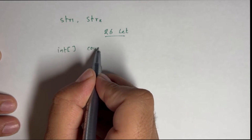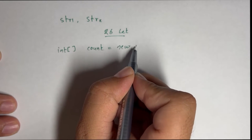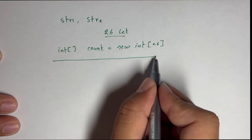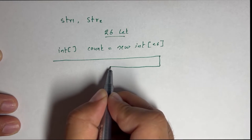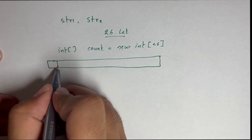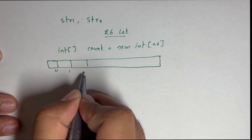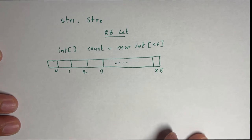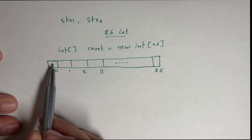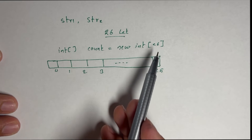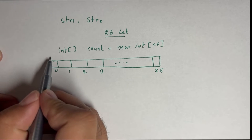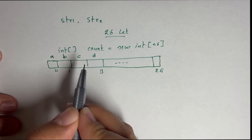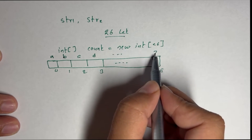Let's call the array 'count', equal to new int of size 26. This will allocate an array of size 26, starting from index 0, 1, 2, 3, all the way to 25. We are going to correspond each index in this array to each letter in English — index 0 for A, index 1 for B, index 2 for C, index 3 for D, all the way up to index 25 for Z.